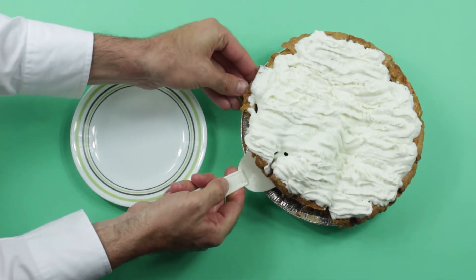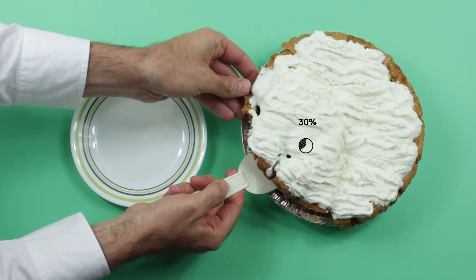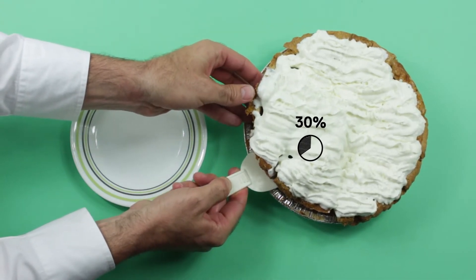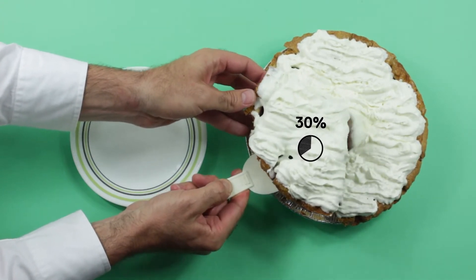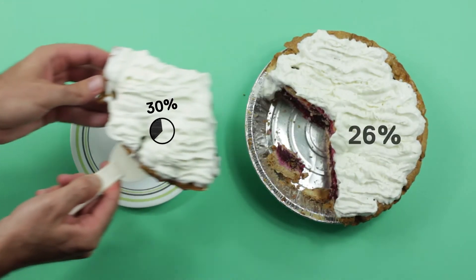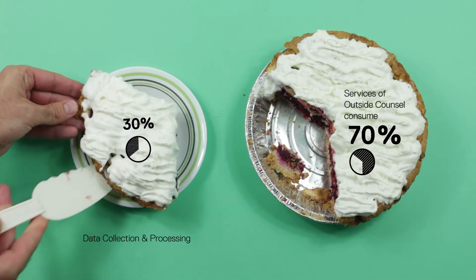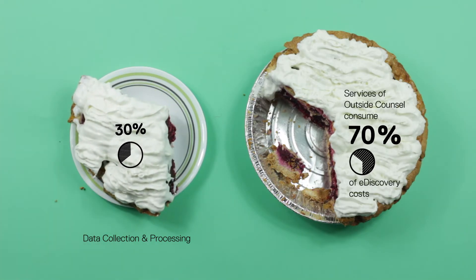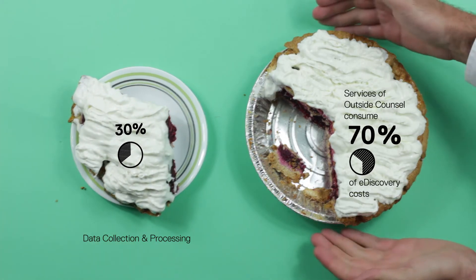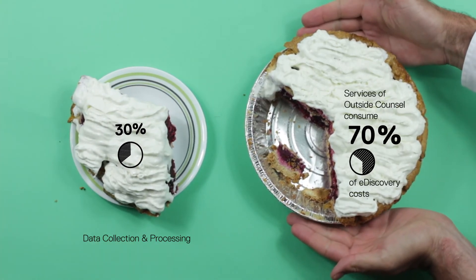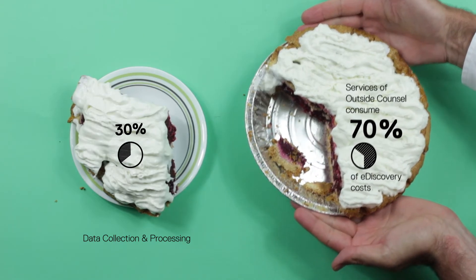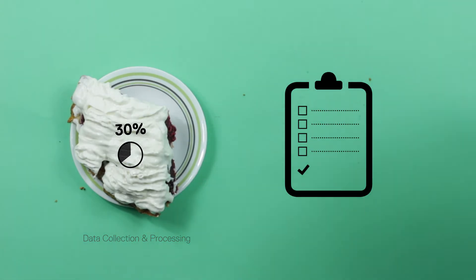Data collection and processing accounts for 30% of e-discovery costs, while outside counsel consumes the other 70%. That's why you need to plan for e-discovery even before you're in litigation.